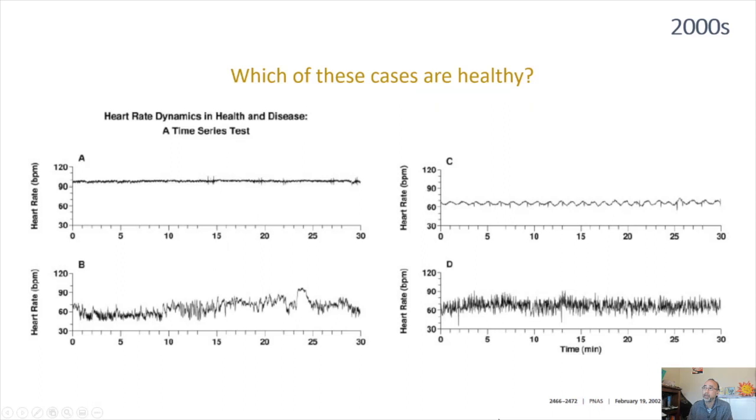So knowing this, which of these cases are healthy? You can see the time series of heart rate over time in four of these examples. And for the one that has absolutely no variability, it's congestive heart failure. This one has periodic variability. This is also congestive heart failure. And this has a lot of variability, almost like randomness to it. And this is atrial fibrillation. And this is the healthy case where you have a combination, basically the balance between order and disorder.